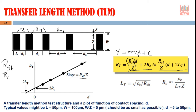Now if you look at the x-intercept — where Y is 0 meaning RT is 0 — and put RT = 0 into the simplified equation, that part becomes 0 and D equals 2 × LT. So the magnitude of D at the x-intercept is 2 × LT, and from this intercept you can find out LT, the transfer length. So all three parameters — sheet resistance, contact resistance (2Rc), and transfer length (LT) — can be found with the help of this Transfer Length Method.